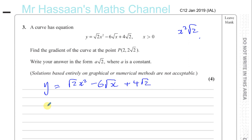We need to find the gradient of the curve at a particular point, so we need to find the gradient function by differentiating. Differentiating an equation gives us the gradient function — it tells us the gradient of the curve at any particular point. Before we can differentiate it, we have to prepare it for differentiation.